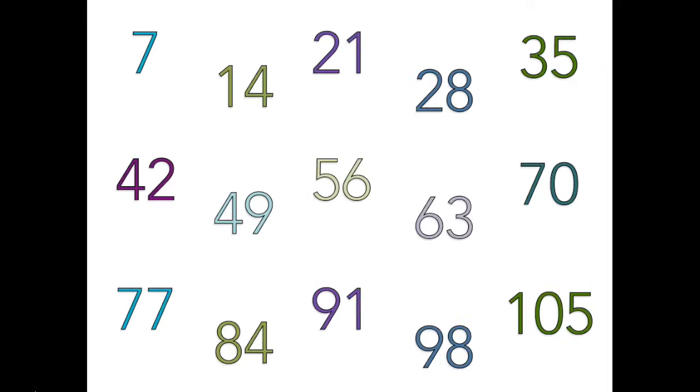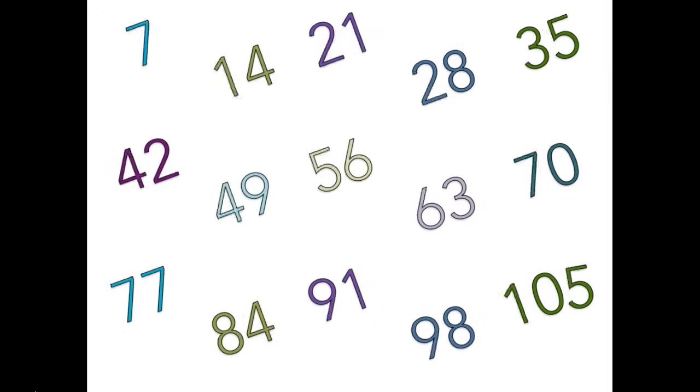70, 77, 84, 91, 98, 105. That is how we count by sevens. We love to count by sevens.